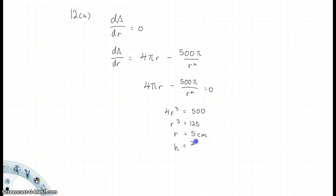Okay, let's continue. We understand that h is 250 over r squared, so therefore it equals 250 over 25, which therefore gives us 10 cm.